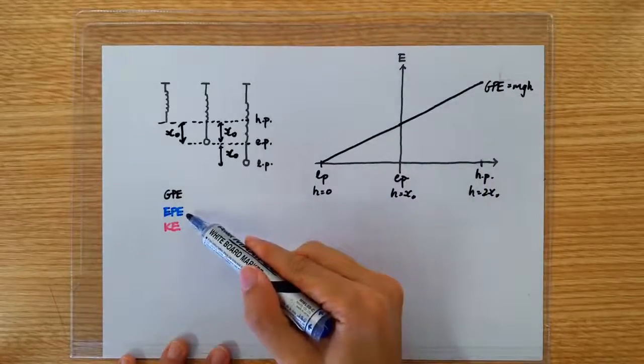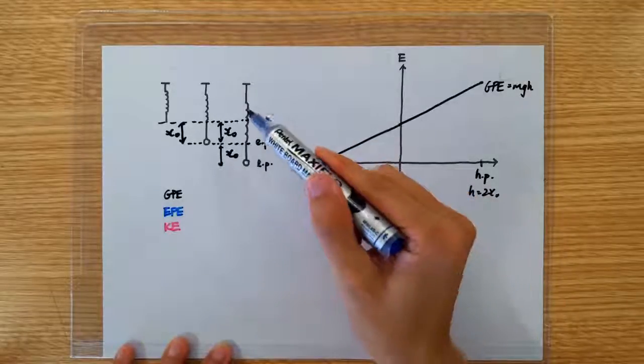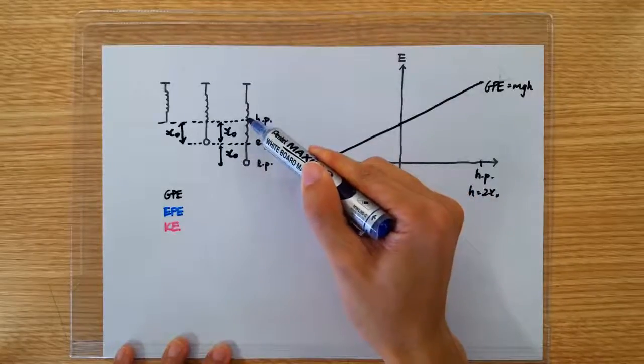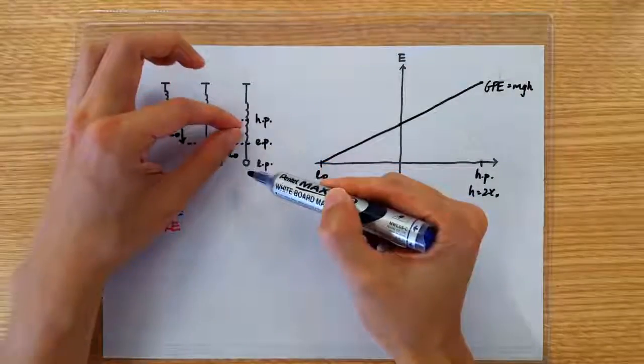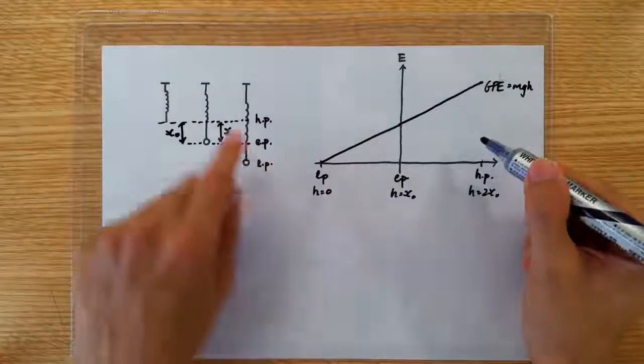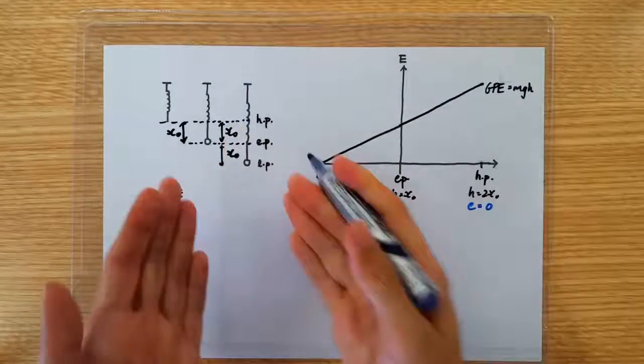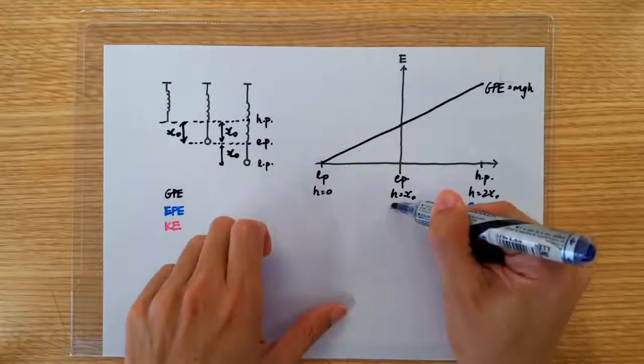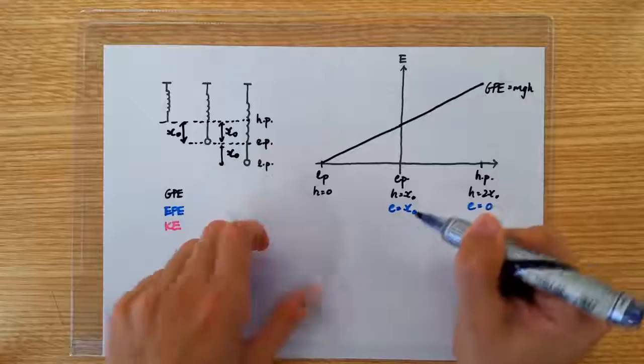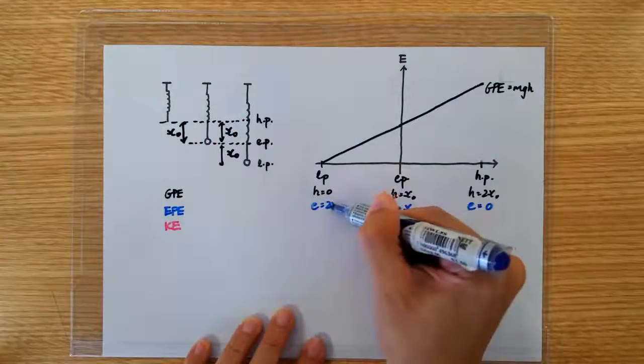Now, the elastic potential energy. The elastic potential energy is going to increase from the highest point to the lowest point, as the spring becomes more and more stretched. At the highest point, the extension is 0 for this particular question. At the equilibrium position, the extension will be x0. And at the bottom position, the extension is 2x0.